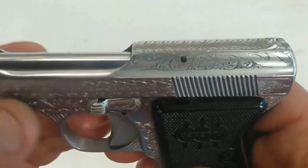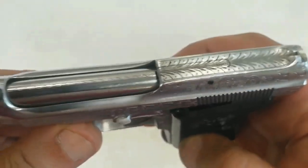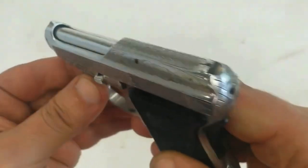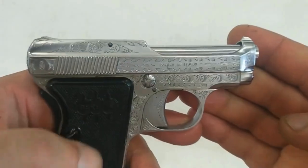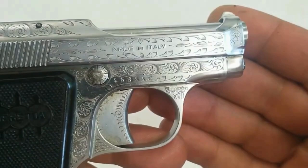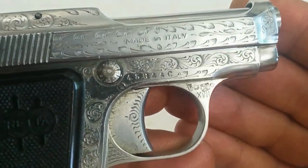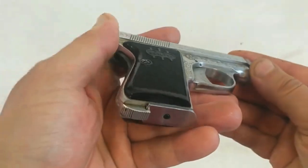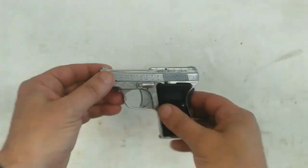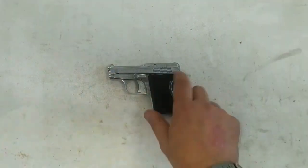Uncertainty surrounds which year Beretta began producing their first .25-caliber pocket pistols. Dates suggested by various sources range between 1919 and 1922. Design work may have started before World War I. However, the company gave precedence to military requirements so work on the compact .25 auto only resumed at the end of the conflict.